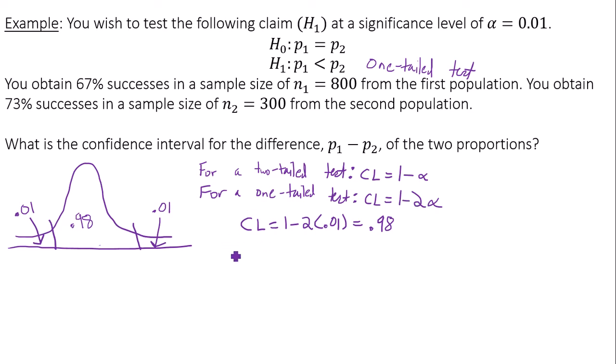All right, so let's go ahead and put our information into the Google Sheet. For group 1, number of successes is 67%, so you do 800 times 0.67, which gives me 536. And sample size for group 1 is 800.